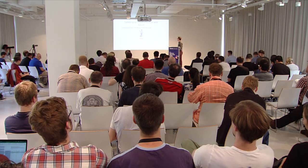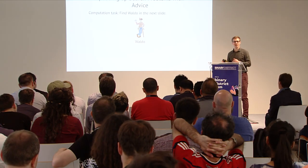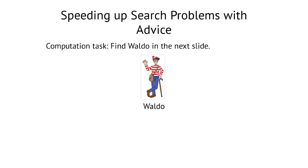A better example for advice is finding Waldo. The idea is that you have a picture, somewhere in the picture is Waldo, and the task is to find where Waldo is. This is a search problem: we have an input — the picture — and our task is to find the position of Waldo in this picture.